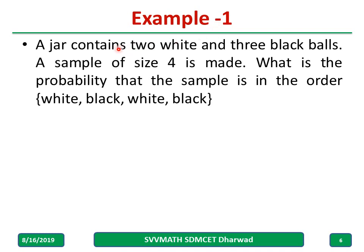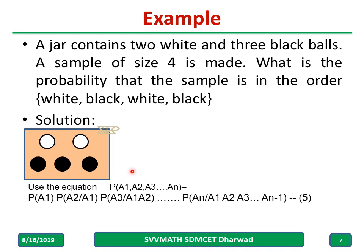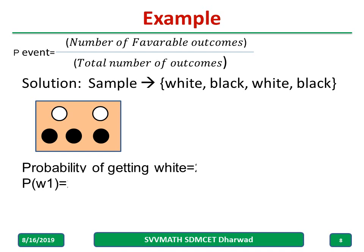Let us take one example. A jar contains 2 white and 3 black balls. A sample of size 4 is drawn. What is the probability that the sample is in the order white, black, white, black? Now, the probability of getting a white ball first: favorable outcomes are 2, total outcomes are 5, so the probability is 2 by 5.